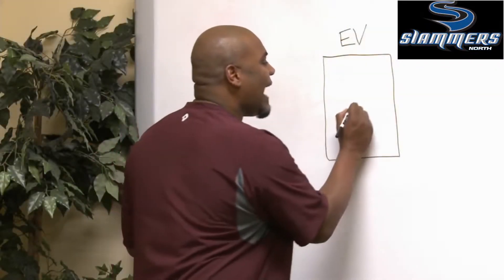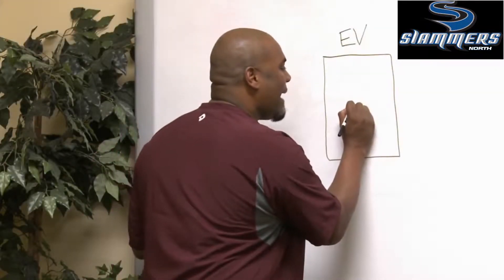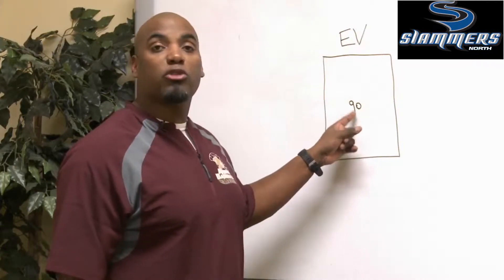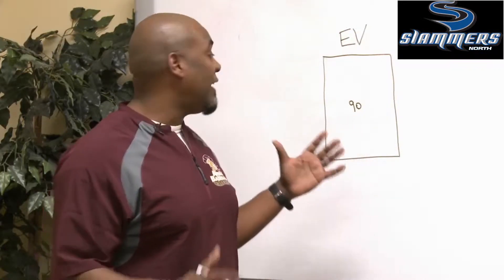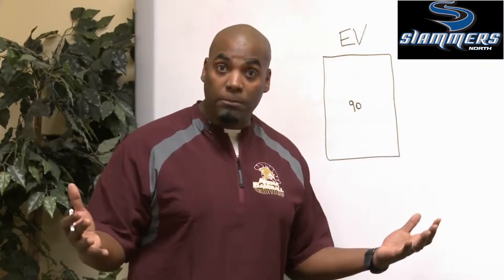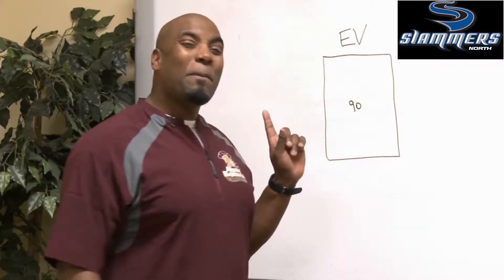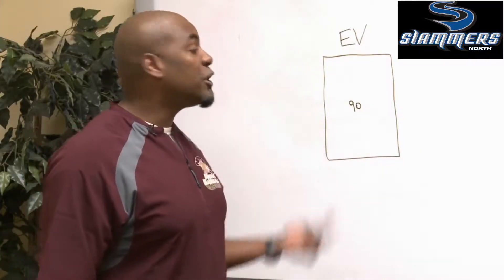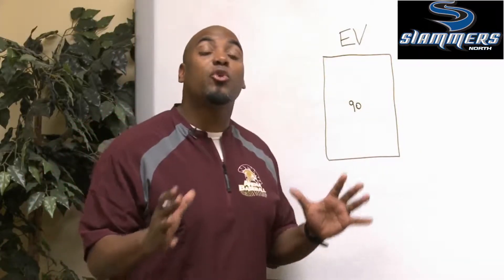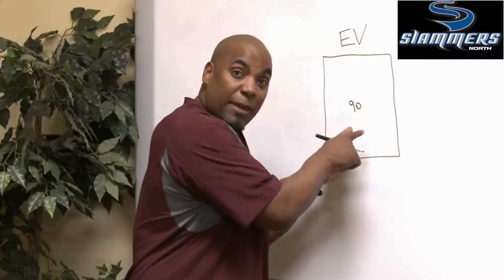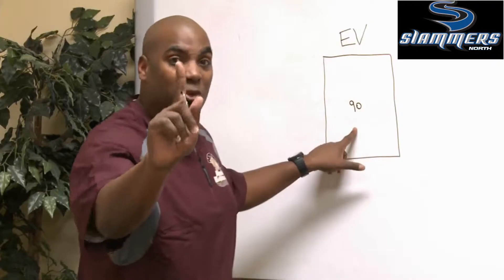Let's take the number 90 miles per hour. A 90-mile-an-hour fastball thrown right down the middle of the plate gives it an effective velocity of just that — 90 miles an hour. But what if the pitch is thrown in? What if it's thrown away? What if it's high? What if it's low? It changes the reaction time. It may not change the velocity of the pitch, but it does change the reaction time for the hitter.